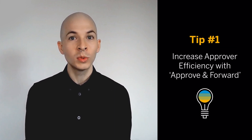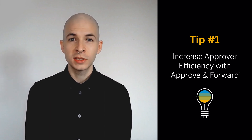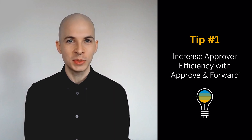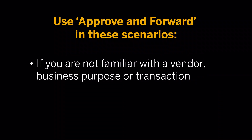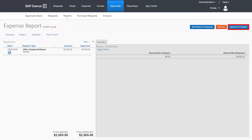First, did you know that you can improve the efficiency of your approval workflow with the click of a button? The Approve and Forward button gives you and your approvers the flexibility to quickly add any additional steps to the workflow. There are many ways to use Approve and Forward, but here are two common examples. First, if you are not familiar with a vendor, business purpose, or transaction and want another manager to review the charge. Or, if an invoice or transaction is within limit but seems higher than expected. Processors can also add approvers ad hoc by choosing Send to Approver, avoiding the unnecessary back and forth.